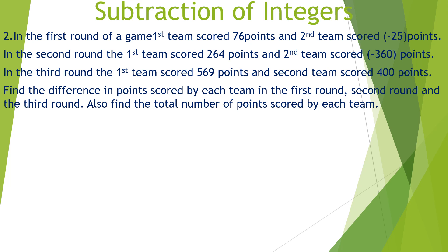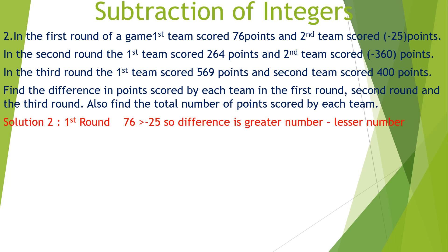Now let us take a problem sum. In the first round of a game, the first team scored 76 points and the second team scored minus 25 points. We need to find the difference in points scored by each team. In round 1, out of 76 and minus 25, 76 is the bigger integer. So the difference equals 76 minus minus 25, which equals 76 plus 25, equals 101 points.